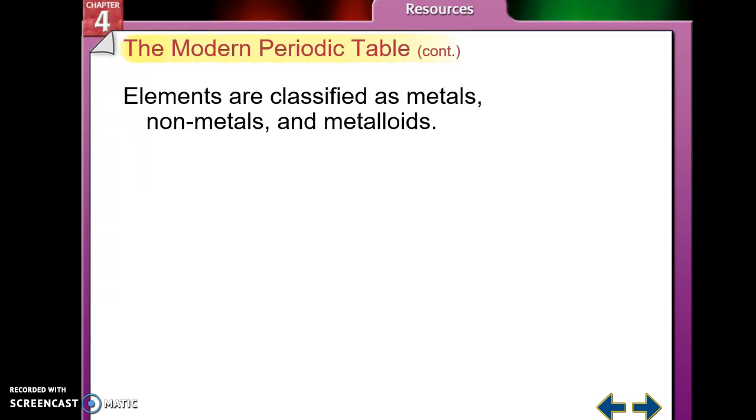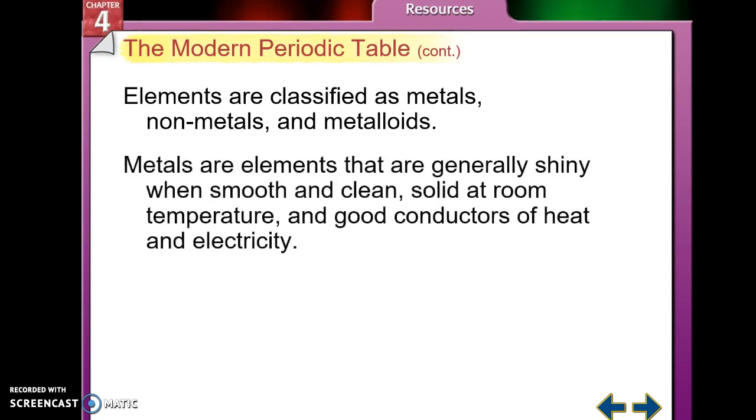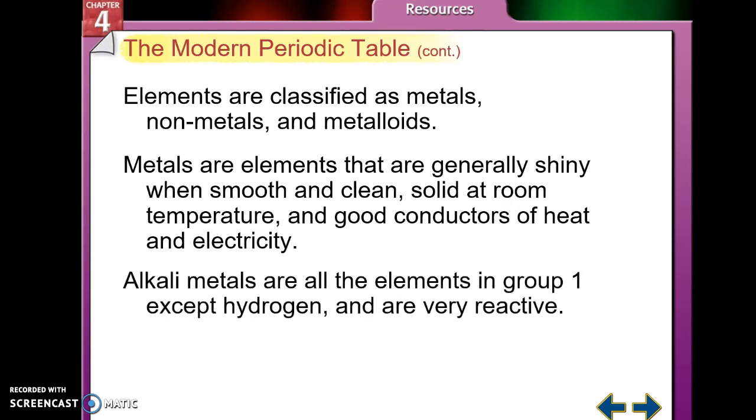I can also classify the periodic table based on metals, nonmetals, and metalloids. Metals are generally shiny, solid at room temperature, and are good conductors of heat and electricity. The metals are going to be on the left side of the periodic table, to the left of this black stair step line that you can see.